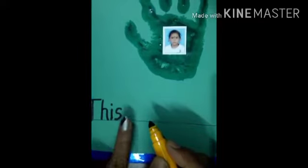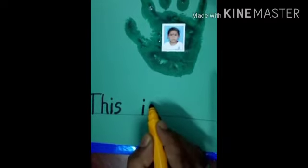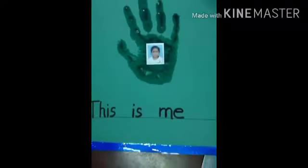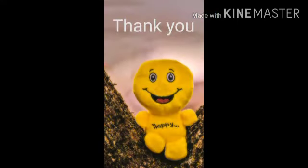And touch the line and write: uppercase T, small h, small i, small s, This. Now put a finger and write I, small s, Is. Small m, small e, Me. This is Me. According to this video, you have to do this activity in your scrapbook. Thank you.